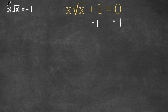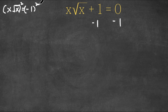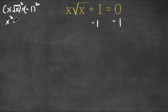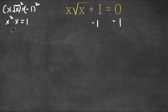Now I'm going to go ahead and square both sides. Now x times the square root of x, squared — x squared is simply just x squared. So we have x squared times the square root of x squared, which is simply just x. This is equal to negative one squared, which is one.